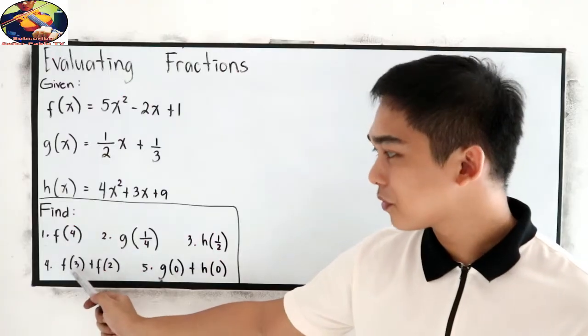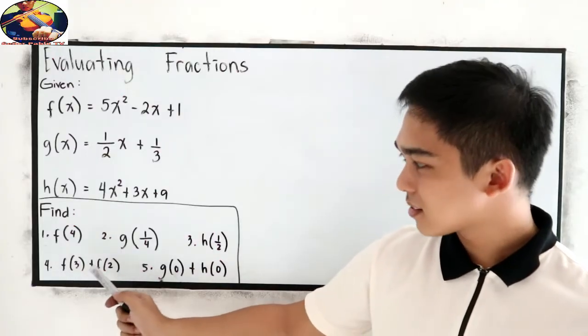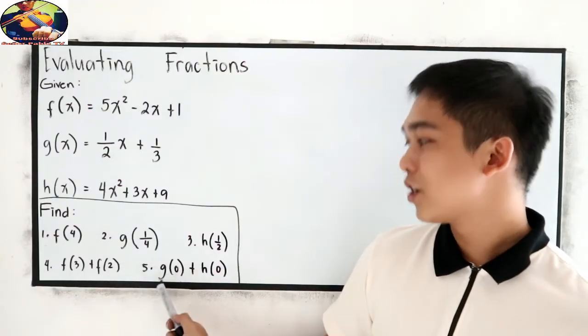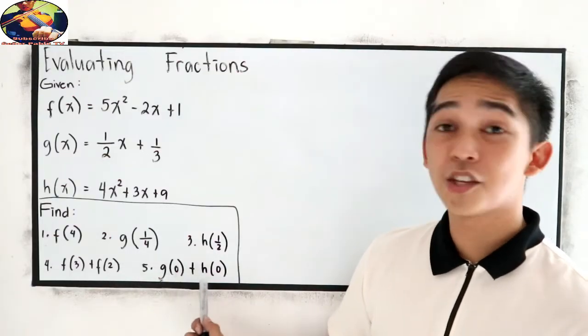And number 4, f of 3 plus f of 2. And number 5, g of 0 plus h of 0.